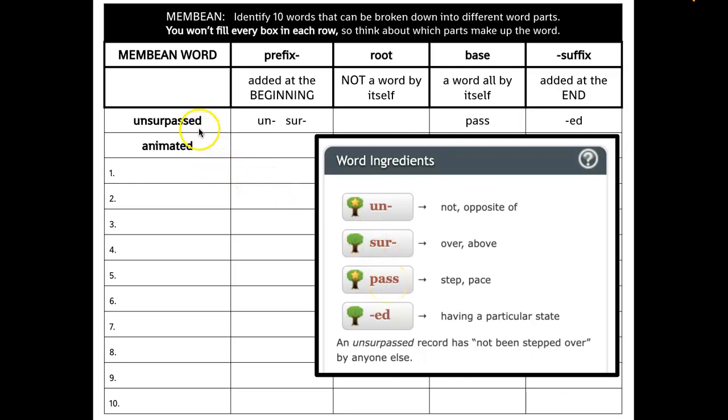So my second example here I'm going to show you is unsurpassed. When I look at unsurpassed, it's got two prefixes. So I'm going to put them here. It has pass, and it's not a root because it has its own meaning. So I'm going to put pass here, and then it has a suffix, ed. So all you're going to do is pick ten different words and just map them out by prefix, root, base, or suffix. And you can see here, I don't have a root in this word, so I'm just going to leave that blank. Or you can put an X on it.